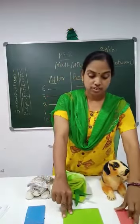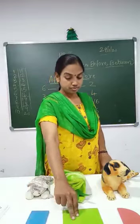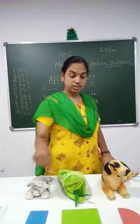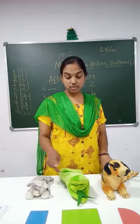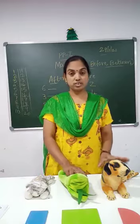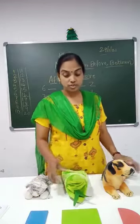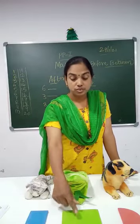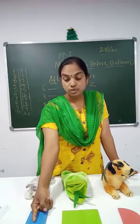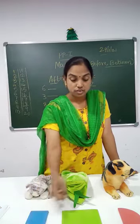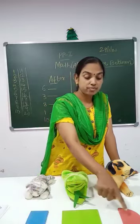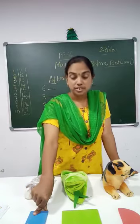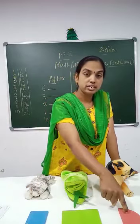So here we have a square, crescent, and rectangle — green, blue, and red. So before the green square we have blue rectangle. After the green square we have red crescent. So before the green square we have blue rectangle, and after the green square we have red crescent.